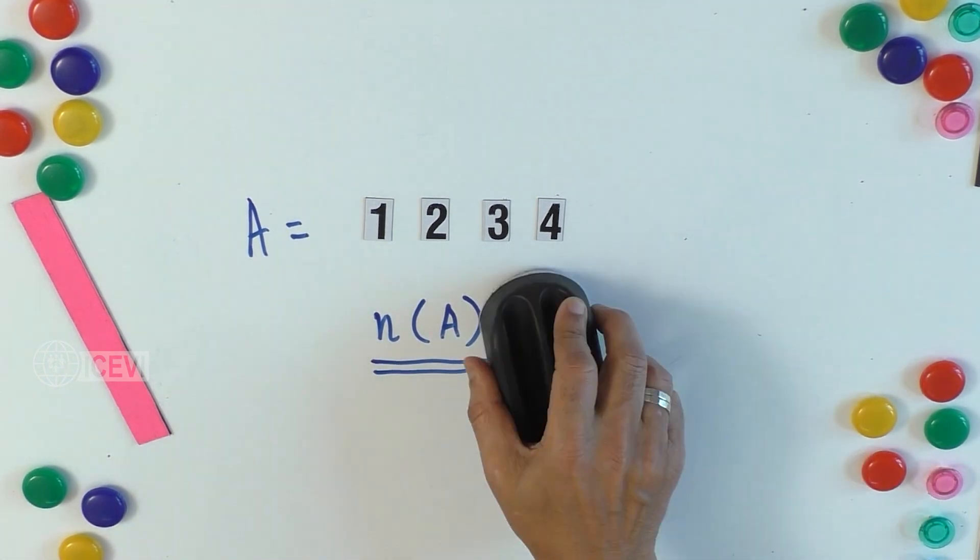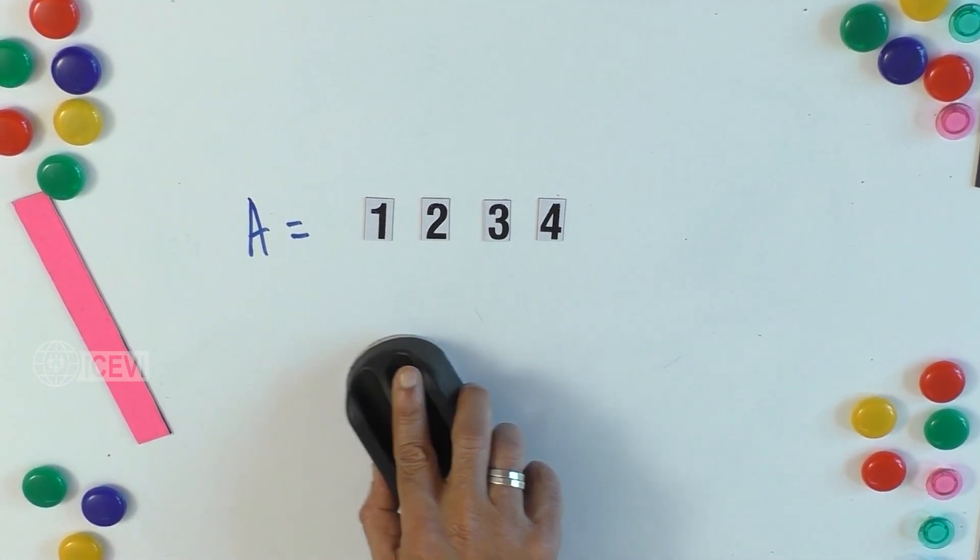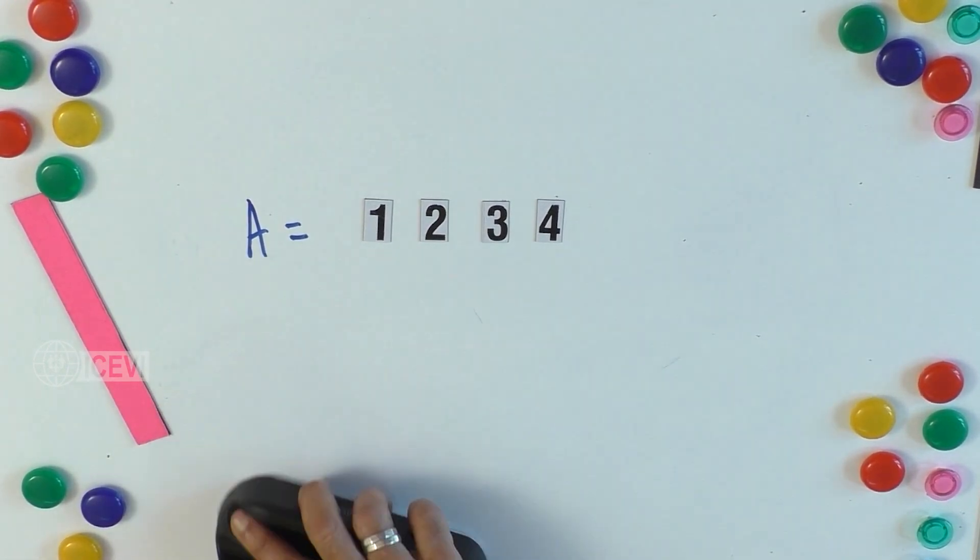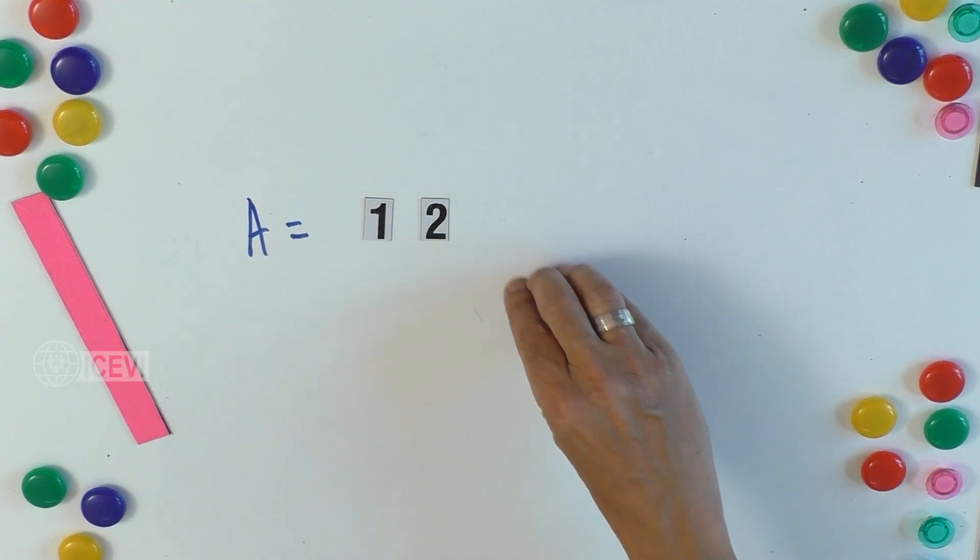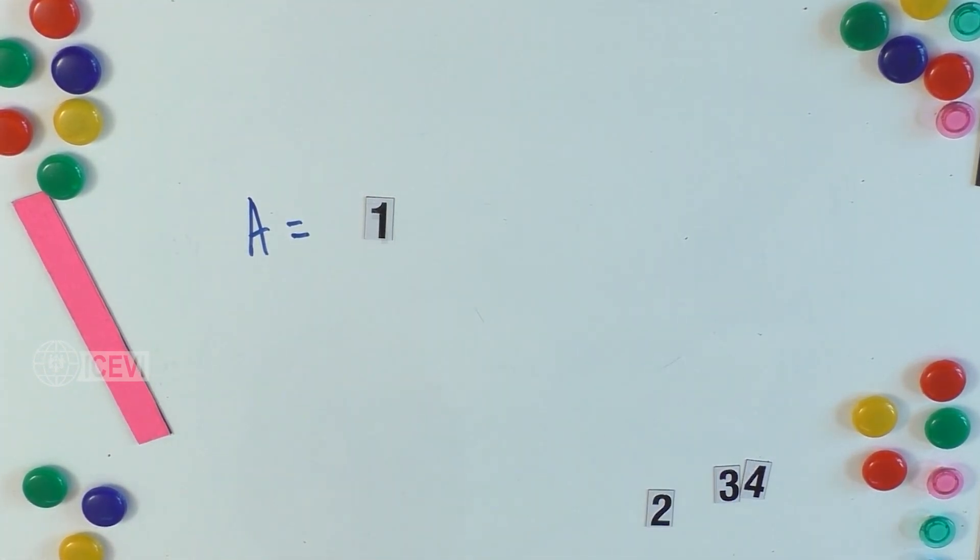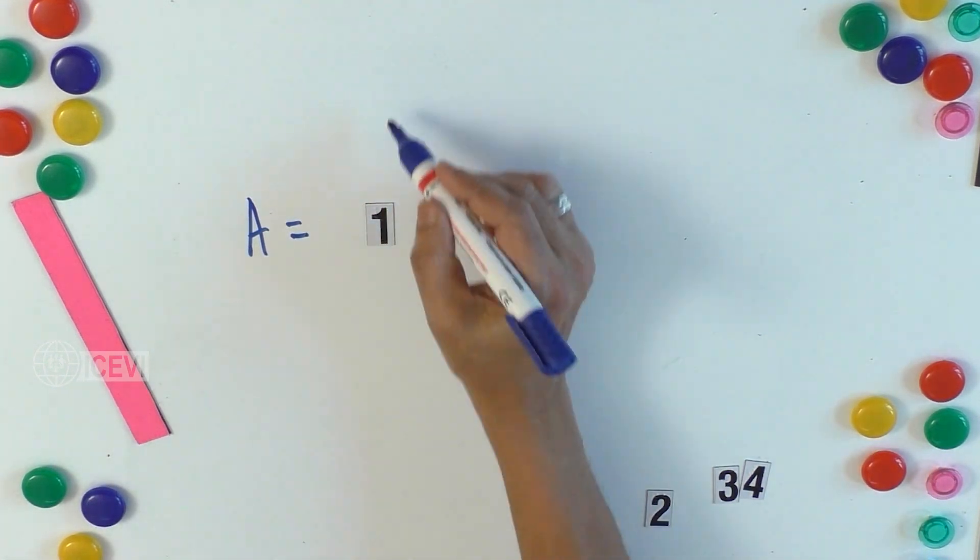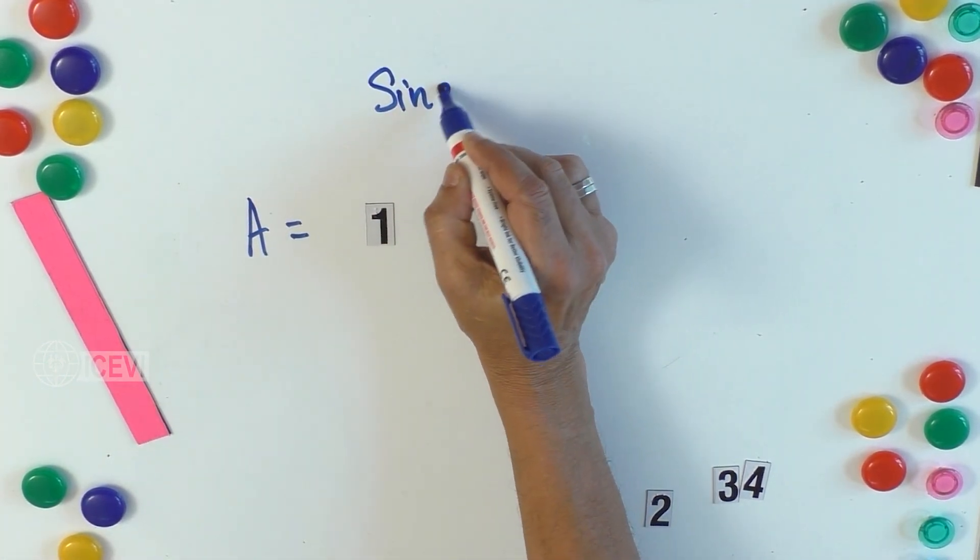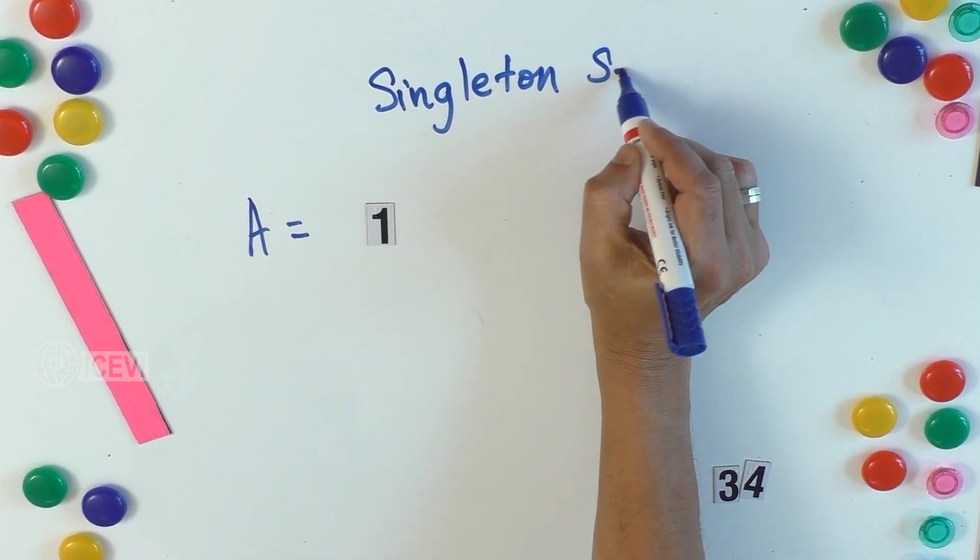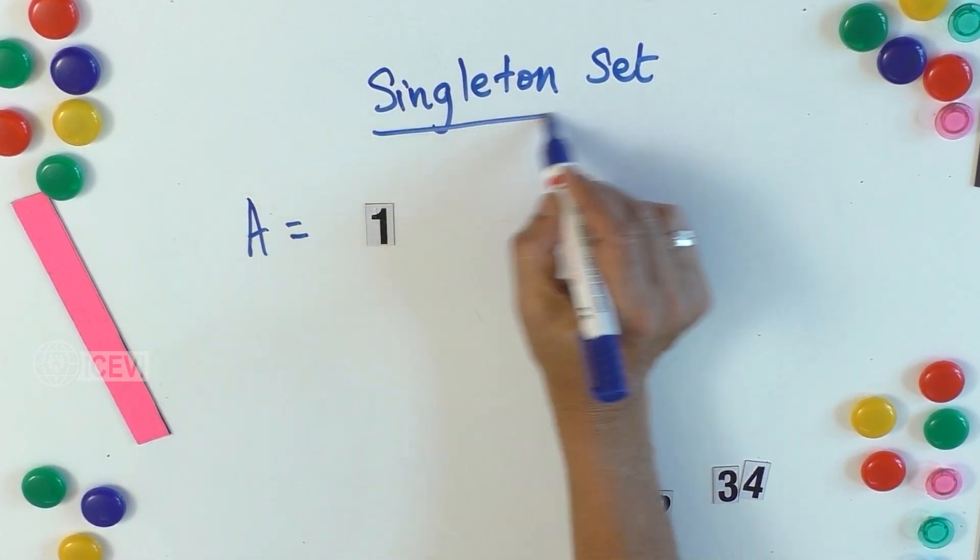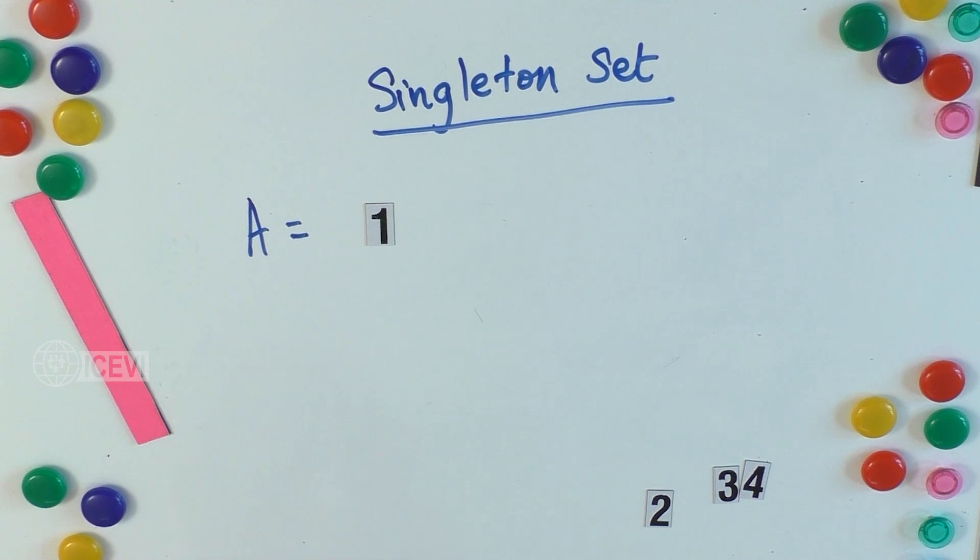Now one more type of set should also be defined. This set has four elements—one, two, three, four. Assume that this set has only one element. We call this set a singleton set. A set with a single element is called a singleton set.